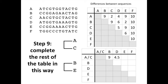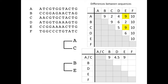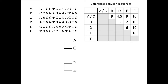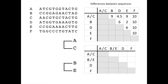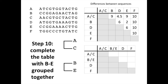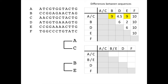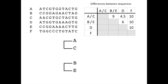We can complete the rest of the table in this way. We have an average of nine differences between A and C to E, and ten differences to F. The rest of the table can be copied down from the first table. With the A and C grouping now added to our new table, we can proceed to also add the B and E grouping. For B and E, we have an average of six differences to the A-C group, 4.5 for A-C to D, and ten for A-C to F. For B and E to D, we have an average of six differences, and an average of ten for B and E to F. There are also ten differences between D and F.